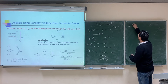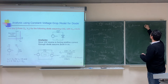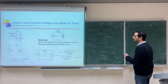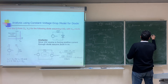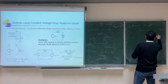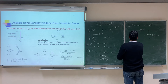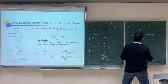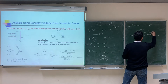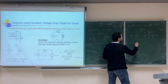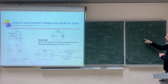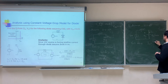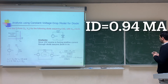Again, assume the diode is on. In the constant voltage drop model, we replace the diode with a battery of V_D0 = 0.6V. The circuit is: 10V source, 10kΩ, and a 0.6V battery. Solving: V_D = 0.6V, and I_D = (10 − 0.6) / 10kΩ = 9.4 / 10k = 0.94 milliampere.